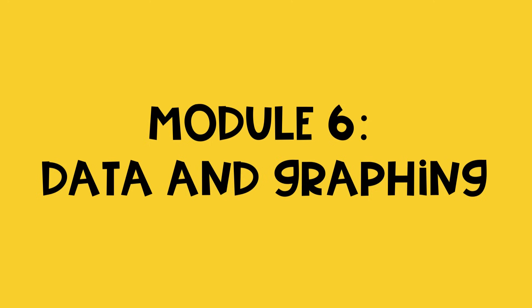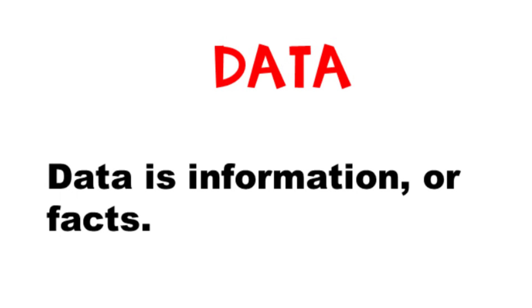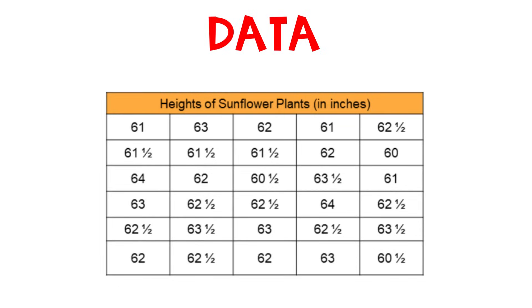Module 6: Data and Graphing. Data. Data is information or facts. In this example, the data is the height of sunflower plants in inches.